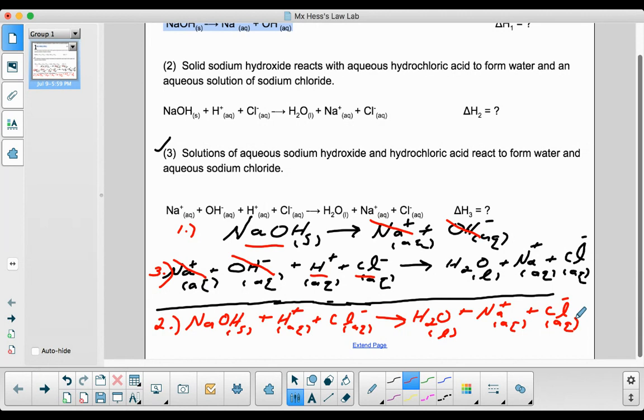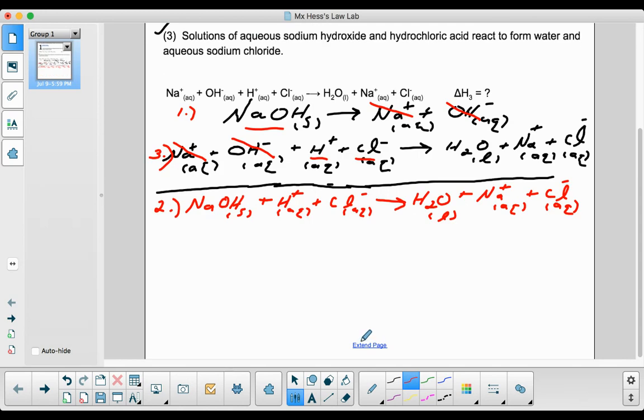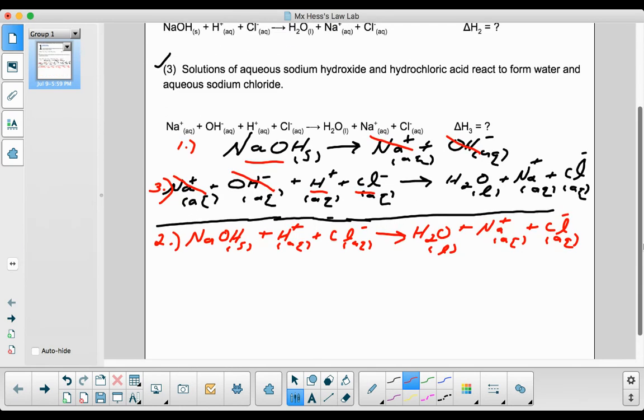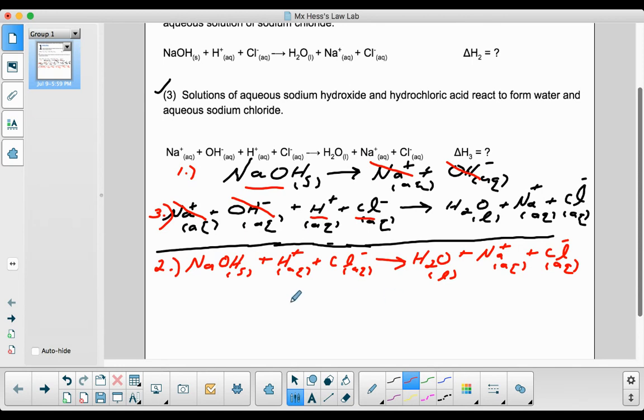Now I still have a few of the species that remain that are the ones you see in reaction two. If I look at reaction two, I can see that I have the NaOH solid, the H+ ion, the Cl- ion, the H2O liquid, the Na+ ion, the Cl- ion, and there they are.